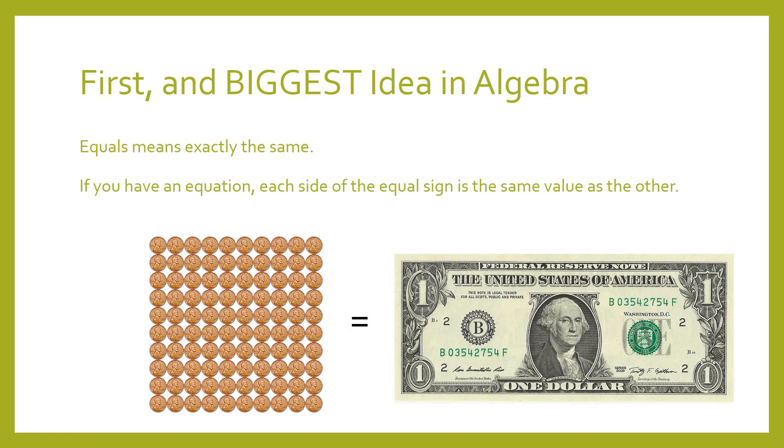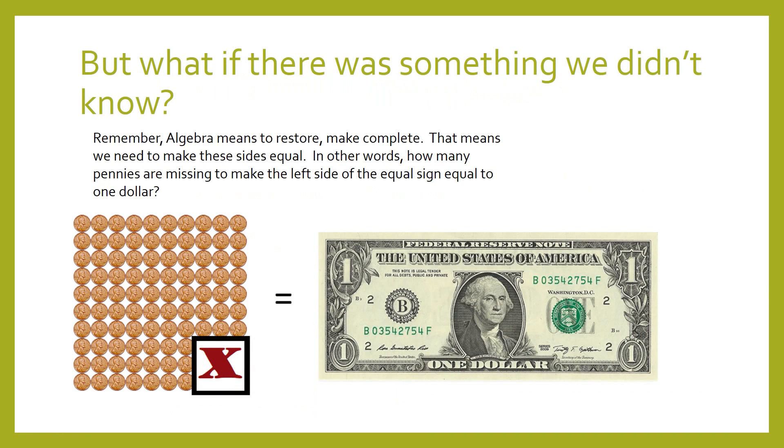Now, the biggest idea in algebra is to maintain equality. See the equal sign right here in the middle of the dollar bill and the pennies? That means that each side is the same. 100 pennies is equal to one dollar. Everything in algebra must respect that equality. We always have to keep one side equal to the other. It's the big idea.